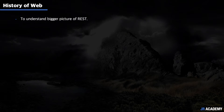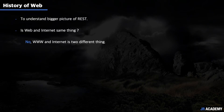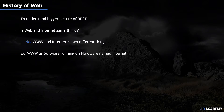Every time we see WWW, one thing comes to mind: the internet. But are the web and the internet the same thing? The clear answer is no — WWW and the internet are two different things. You can consider the World Wide Web as software running on the hardware called the internet.